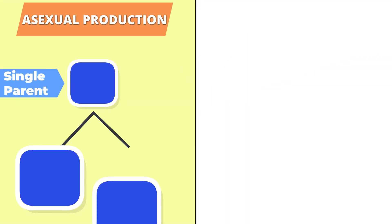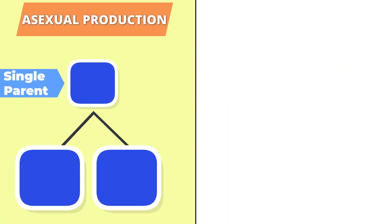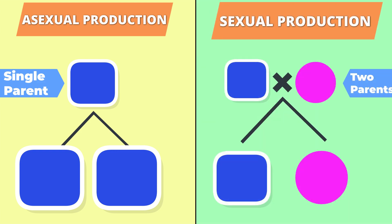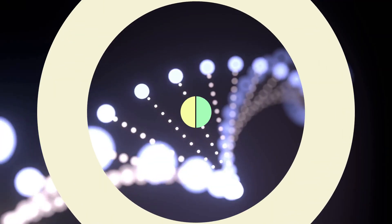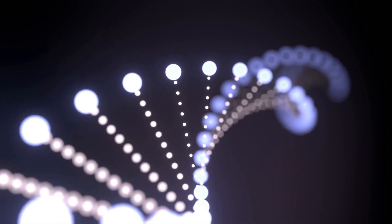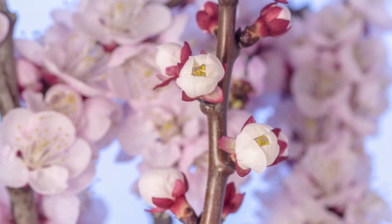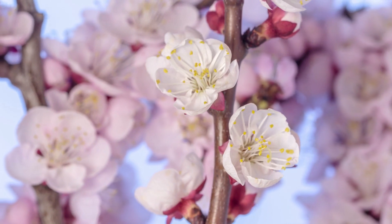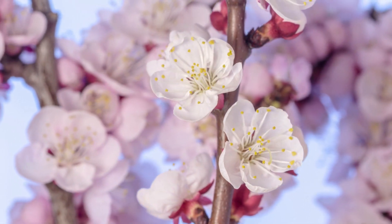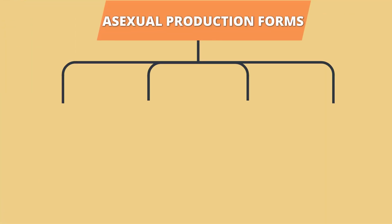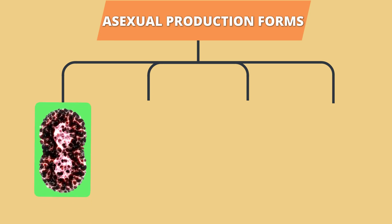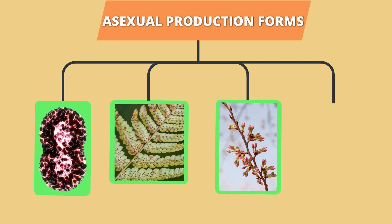In asexual reproduction, an offspring is produced from a single cell of the parent, and unlike sexual reproduction, only one parent is involved. Since there is no mixing of genetic material, the offspring is always an identical copy of the parent because it inherits all the same traits. Asexual reproduction has several forms, such as binary fission, spores, and budding,